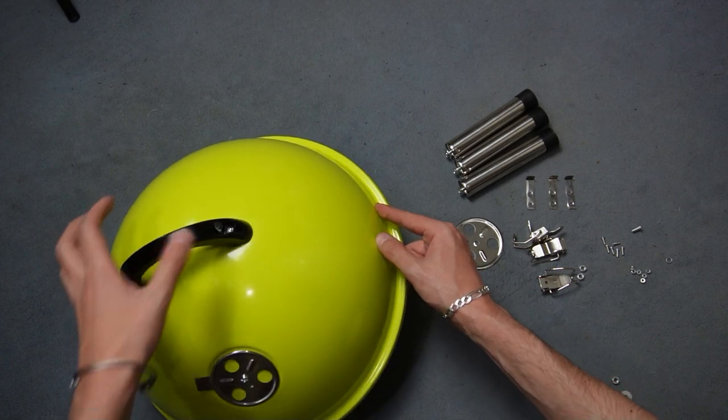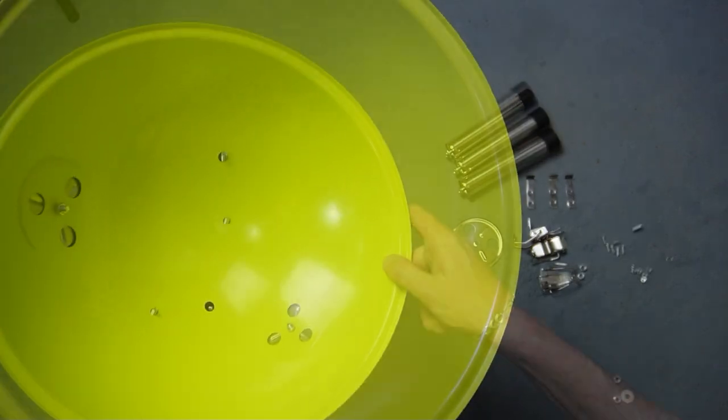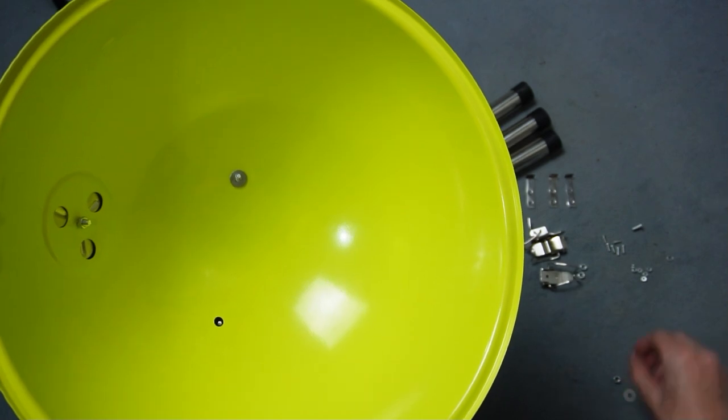Hold the bolts with your hand because they can fall out of the holes. Now place one flat washer and tighten one of the big nuts on each one of the bolts.